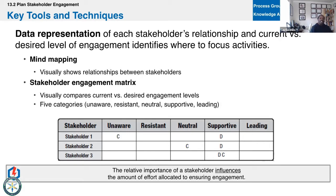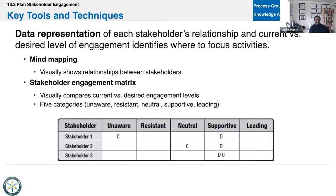One of the things you can use is a stakeholder engagement matrix. It shows those folks who have no idea the project is happening but are affected the most — those are the unaware folks. Then you have the resistant folks who don't want to change: 'this is the third ERP we've implemented in the last five years, I don't want to change again.' Then there are neutral folks who check in at eight, check out at five, and don't respond after hours. Then supporter folks — they'll be the cheerleader until you actually need them. And the leading folks will tell everybody how great the project is, like a project champion. We want to find these folks and arm them with information. Figure out where they're at and then come up with a strategy to get them where you want them to be.